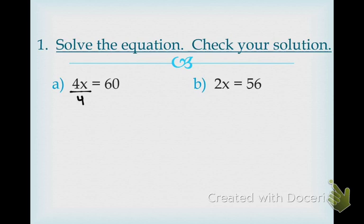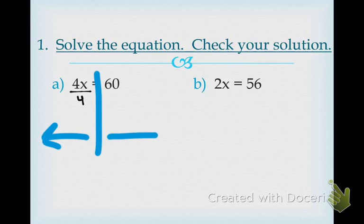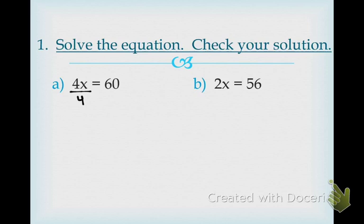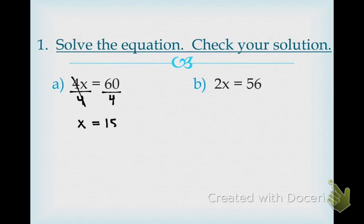We're thinking of it as this is the left side of the problem and that is the right side of the problem, always divided by the equals sign. I want to get rid of that multiply by 4, so I have to divide by 4. Then, to the right side, I have to be fair and do the same exact thing — 60 divided by 4. Now, 4x over 4: what is 4 divided by 4? It equals 1. That's an understood 1, so you can simply write x equals, and 60 divided by 4 is 15. So x equals 15 is your answer.